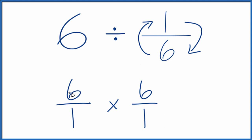When we're multiplying fractions, we multiply the numerators and the denominators. So 6 times 6, that equals 36. And 1 times 1, that equals 1. So 36 over 1, that's just 36.